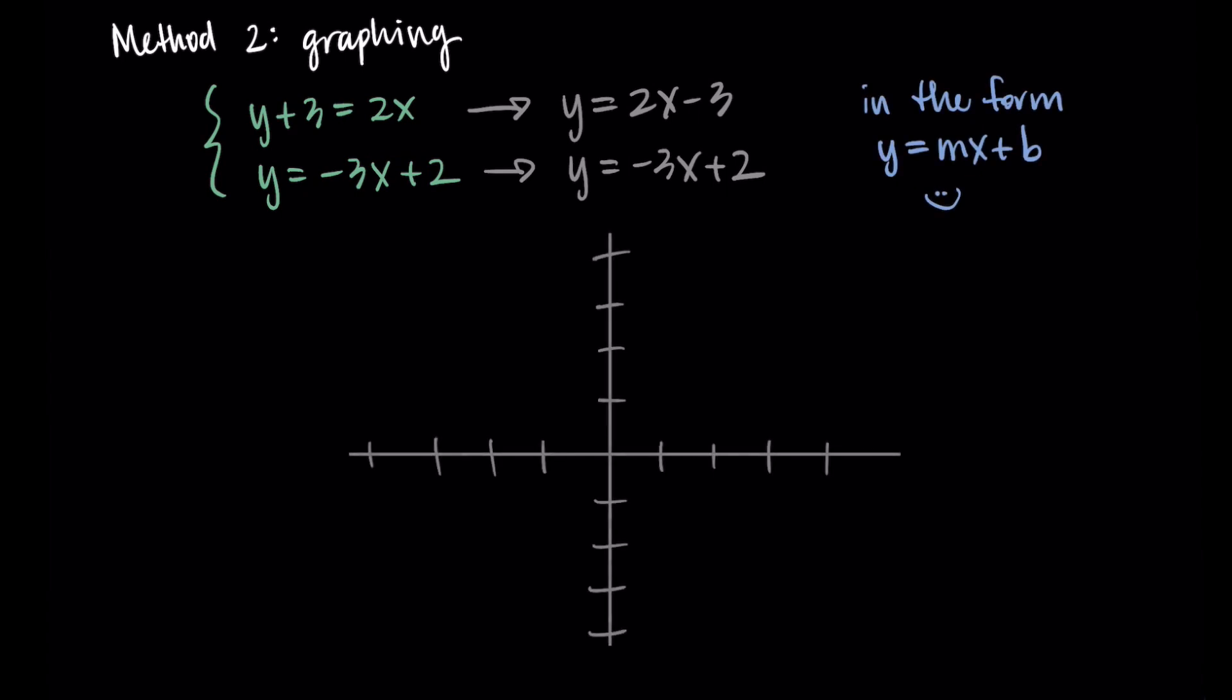Now we could graph these equations to really confirm that our answer is correct. I like to do this especially when we're in two dimensions because lines are pretty easy to graph. Looking at my original system, what I'm going to do is write these in the form Y equals MX plus B, slope intercept form, just so it's easier for me to graph them. That first equation, I'll subtract the three over, I have Y equals two X minus three. In the second equation, I already have it in the right form. So it's Y equals negative three X plus two.